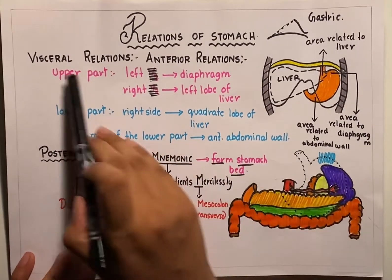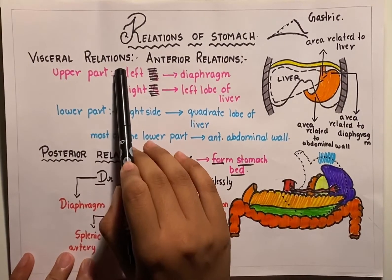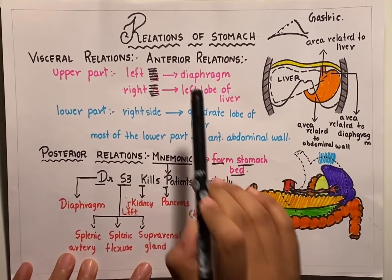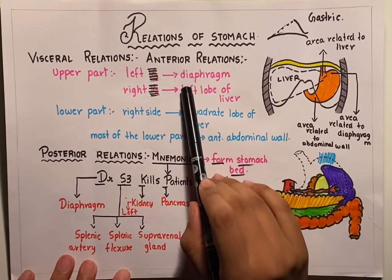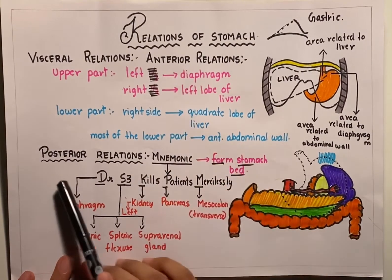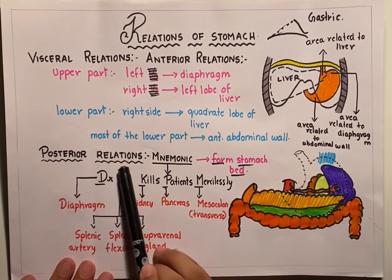The visceral relations of the stomach can be read under two subheadings: the anterior relations and the posterior relations.